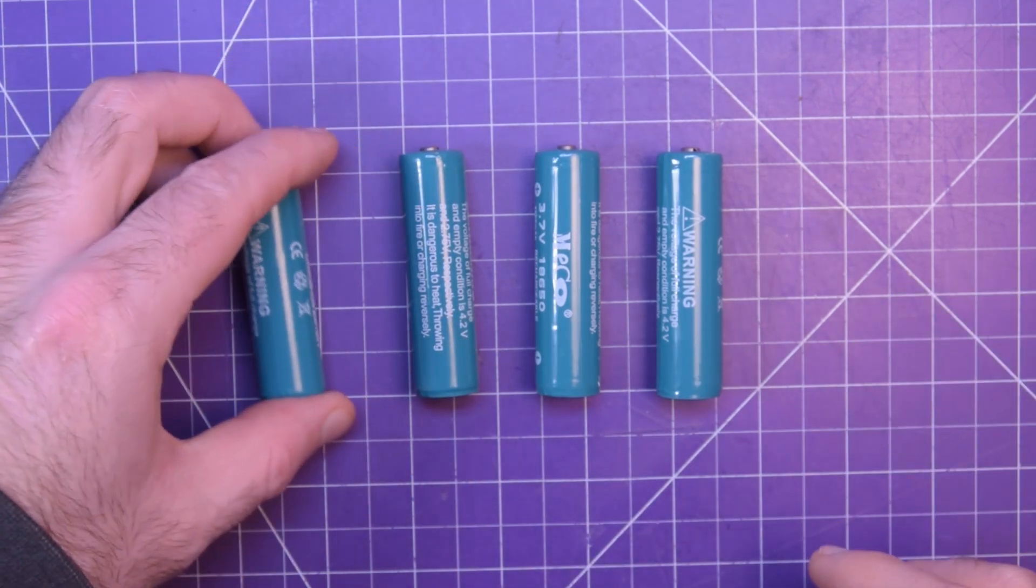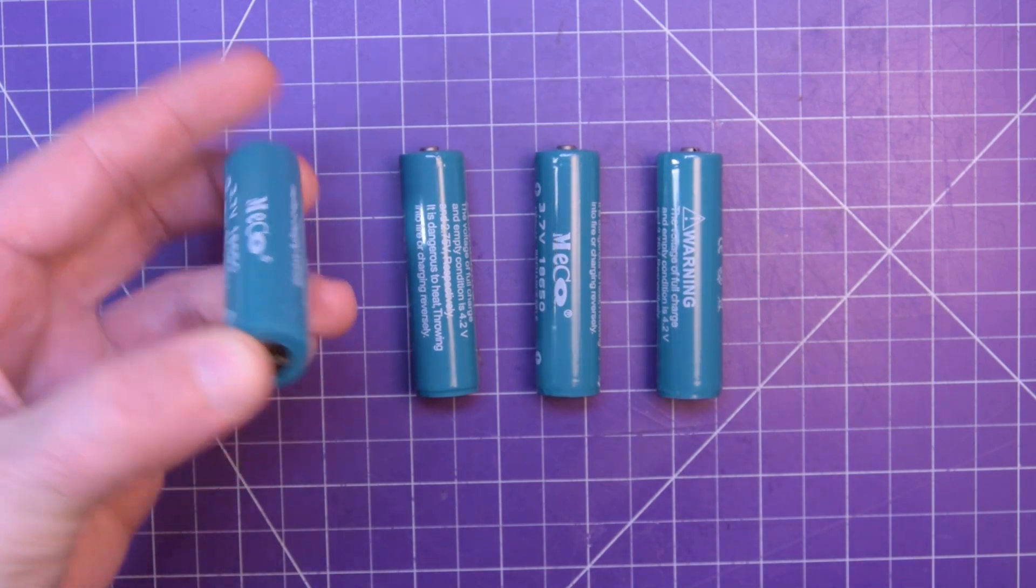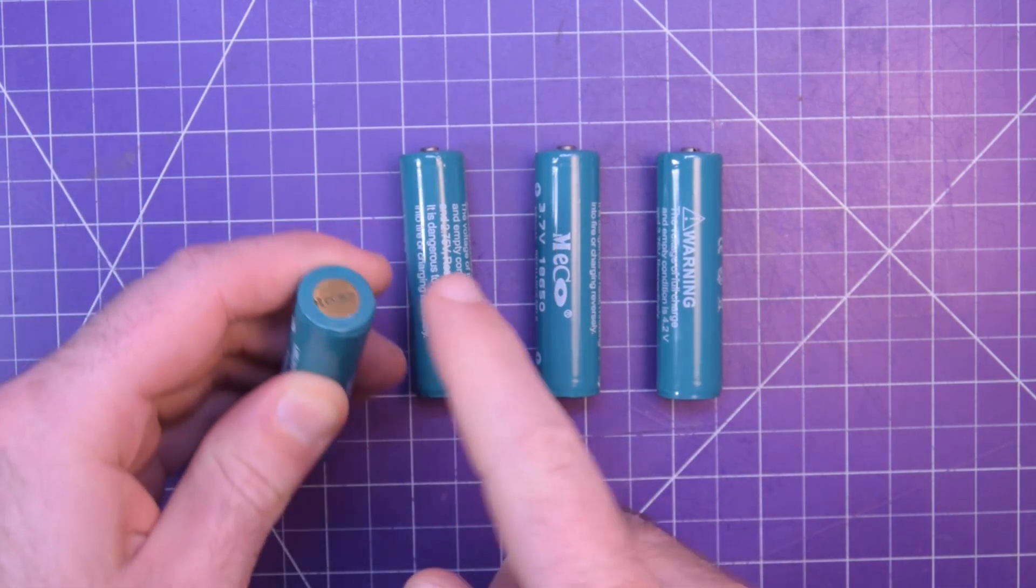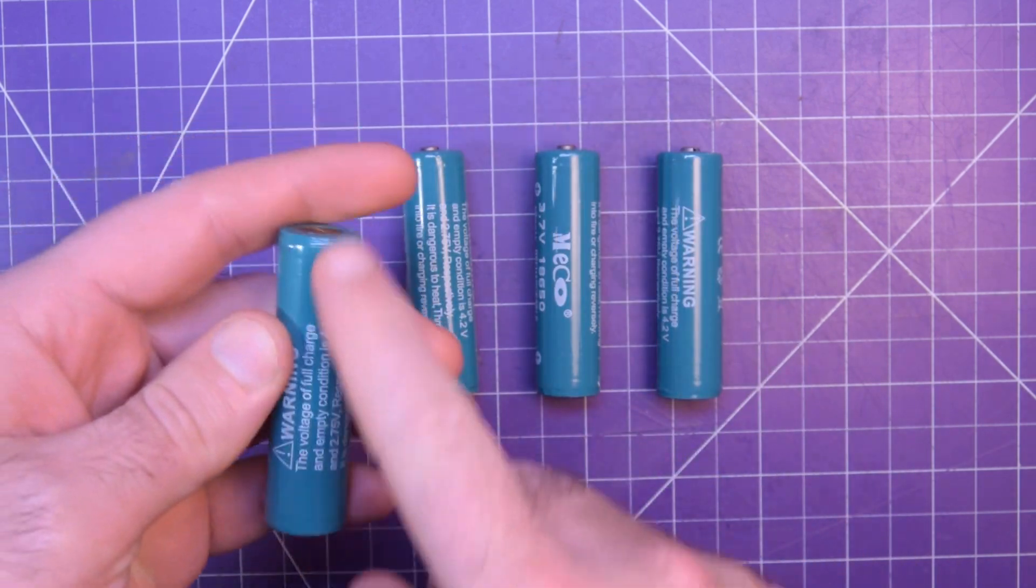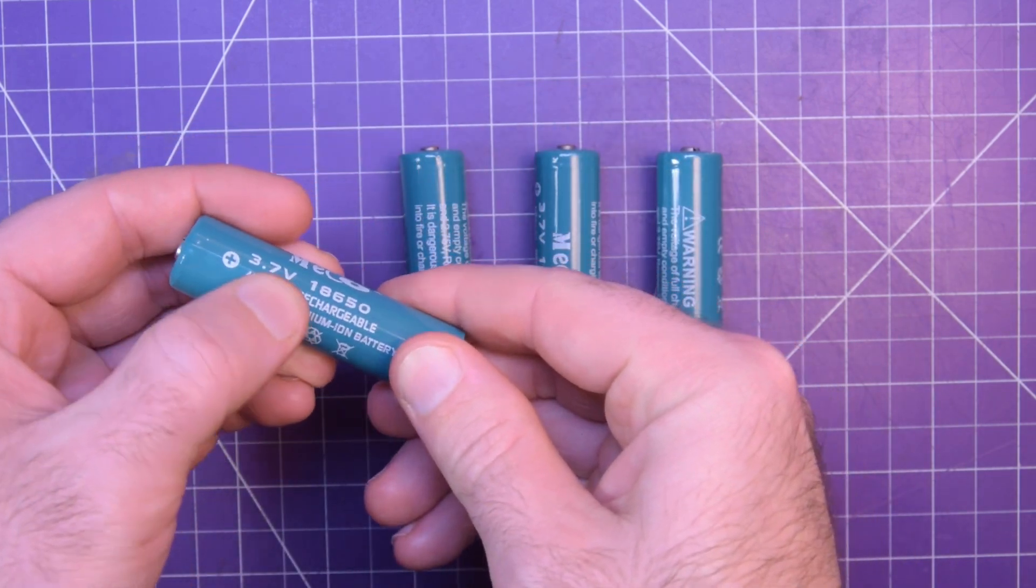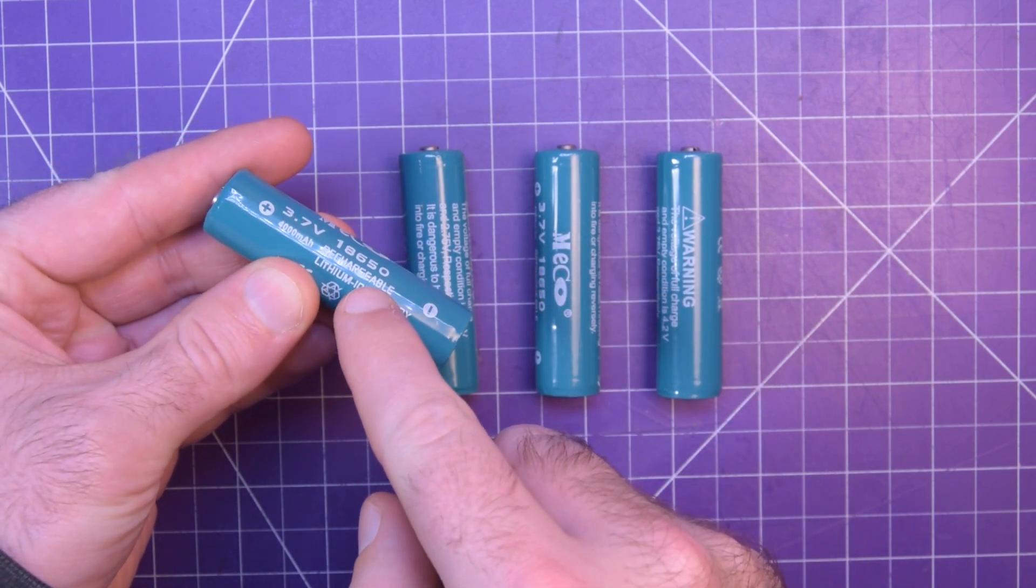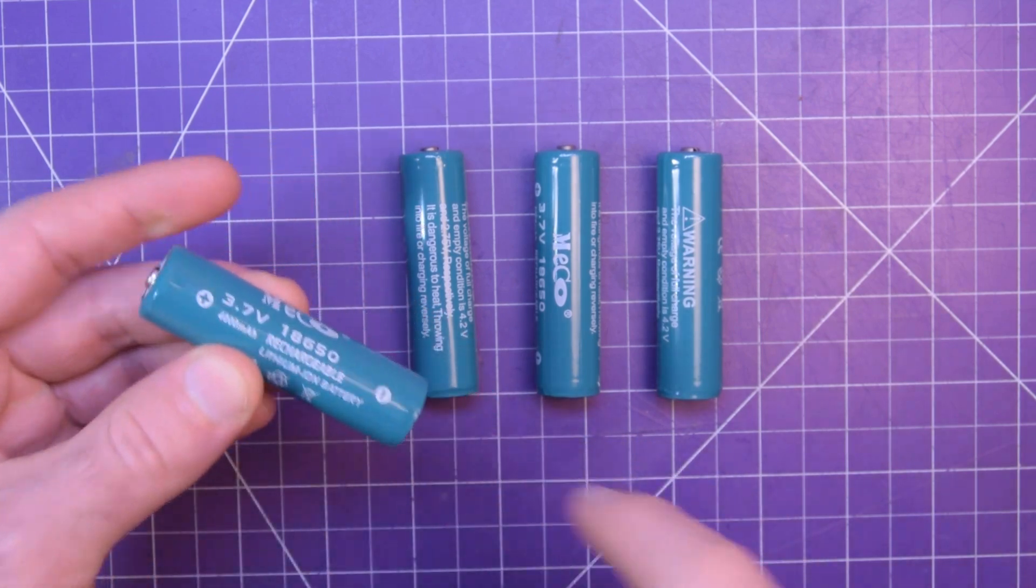These are protected cells from Banggood. You can tell they're protected because you see the little branding on the bottom there. It's because they actually have a circuit board under there and there's a wire that runs up this way. As you can see the reflection there, it's actually underneath this wrapper here.